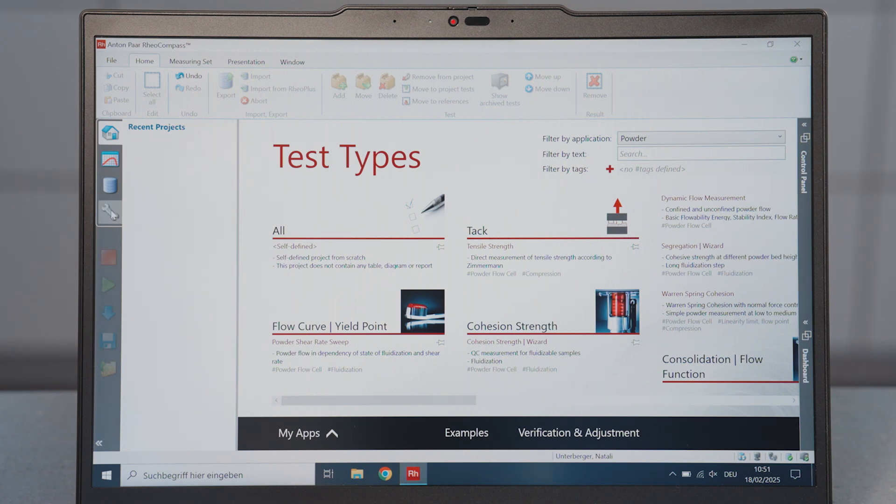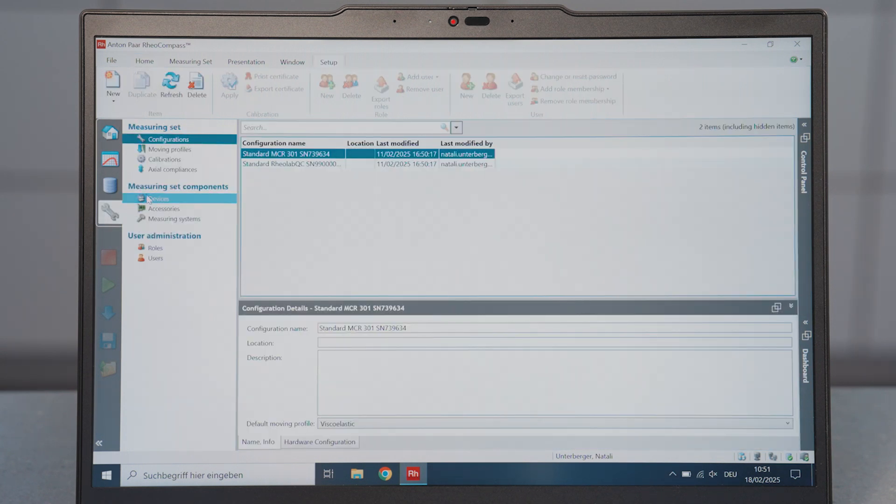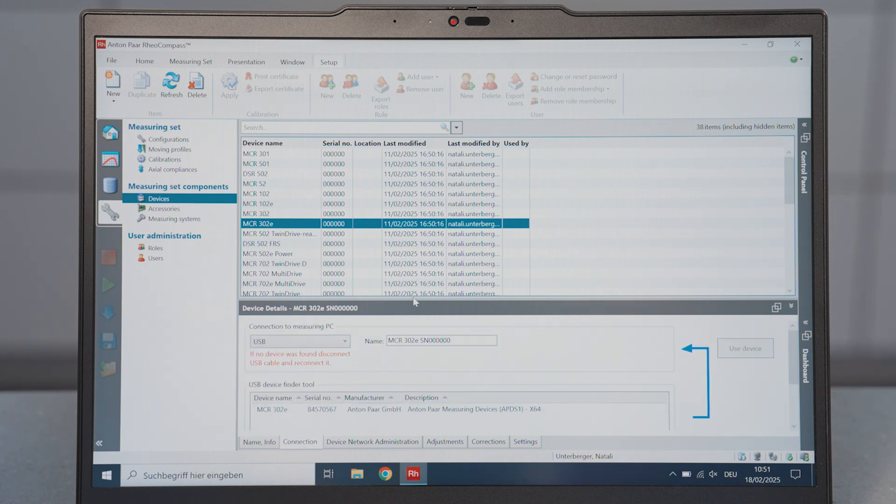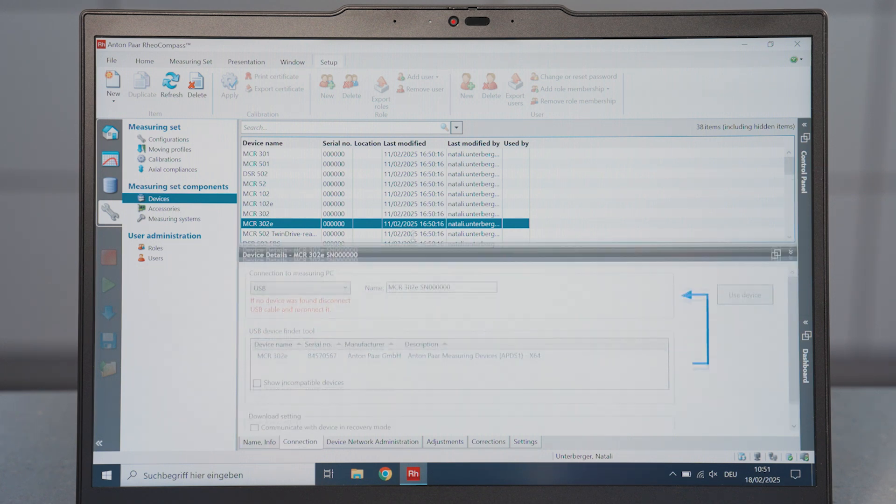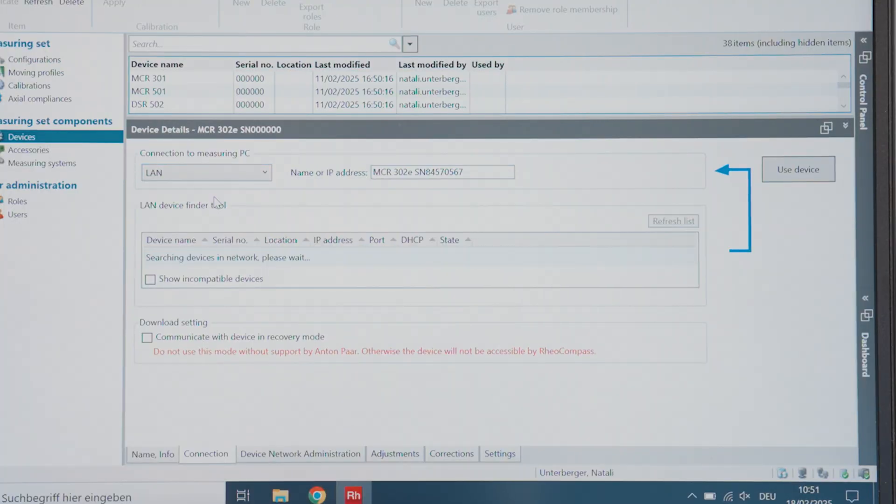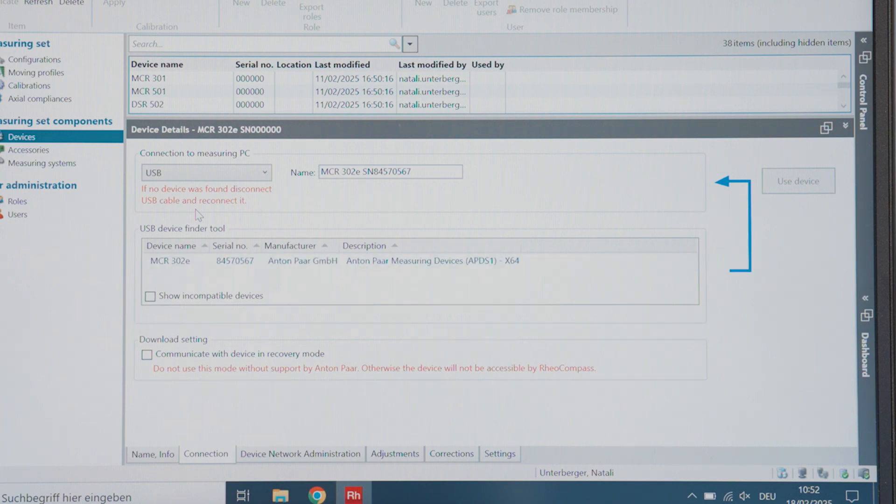Go to Setup, then Measuring Set Components, then Device, and select Rheometer Type. Select the Type of Connection. Once a connection has been successfully established, click on Use Device.